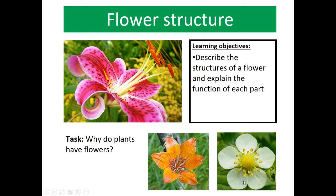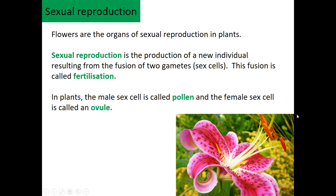Here's some pictures of flowers. What you need to remember is that flowers are there for sexual reproduction, and this is when we need two gametes — the male gametes and the female gametes — to fuse in fertilization. The pollen is the male sex cell and the female sex cell is called the ovule, which is found in the ovary, and the pollen is here on the anthers.